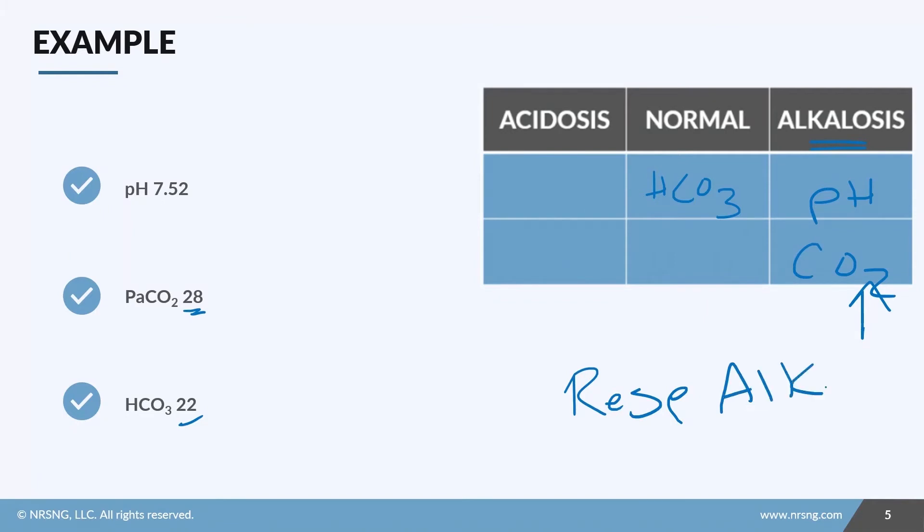So now for step three. Now the first sign that we've talked about already is that both the CO2 and the bicarb are abnormal, right? But we can see the bicarb is normal. So there's no compensation. This is an uncompensated respiratory alkalosis. Done. On to the next one.